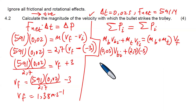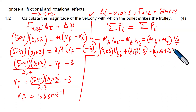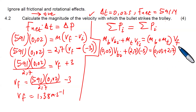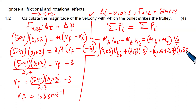That is why the three is negative: we chose to the right as positive, and initially the trolley was moving towards the left. On the right-hand side, the mass of the bullet (0.03) plus the mass of the trolley (2.7) multiplied by the final velocity, which is 1.38 meters per second.